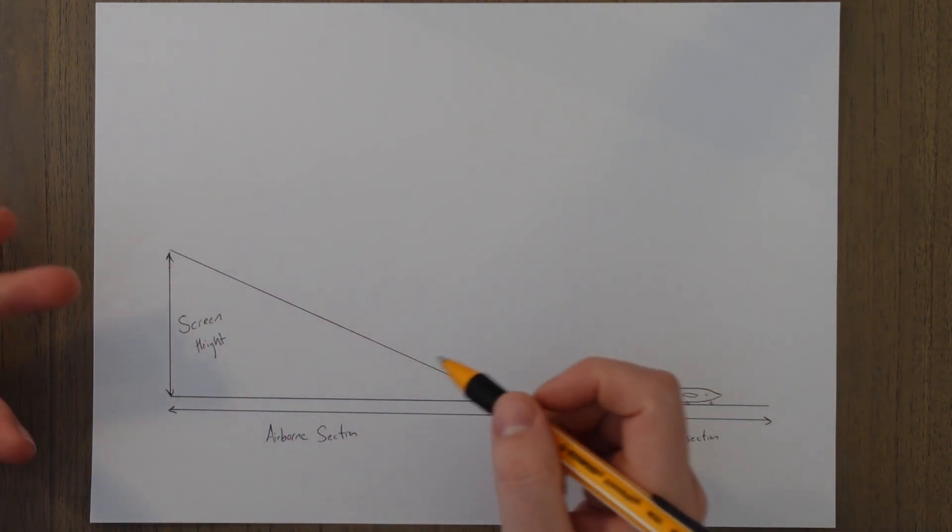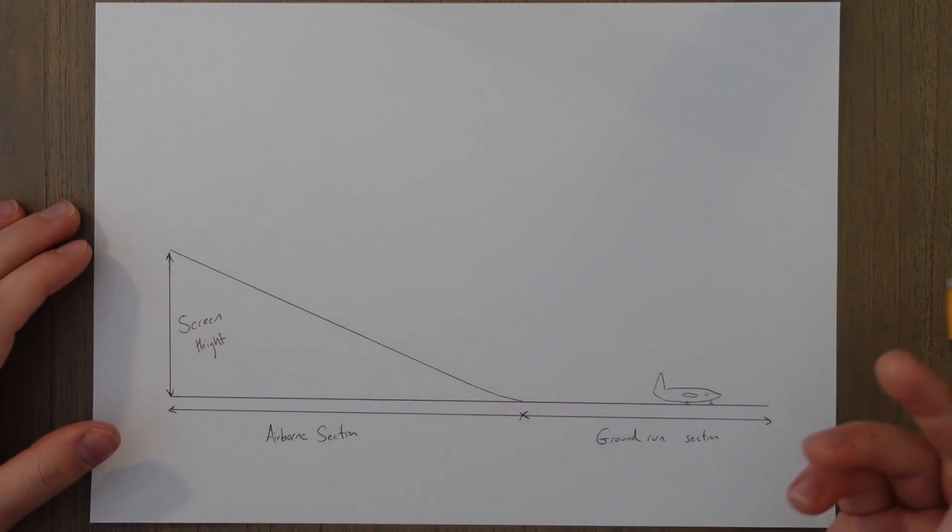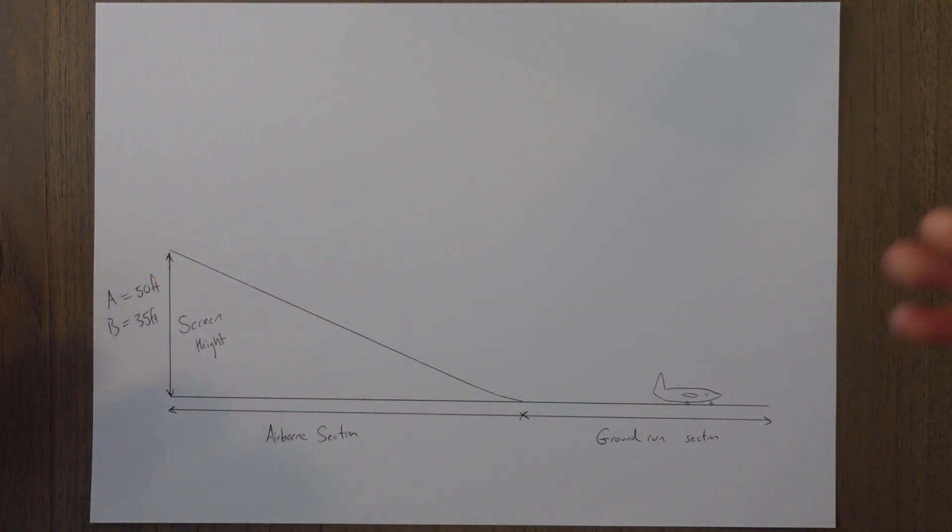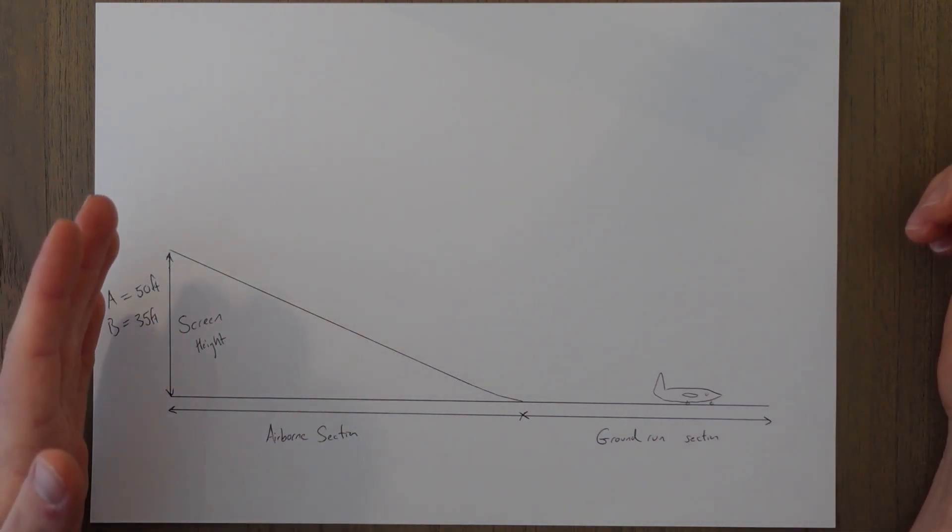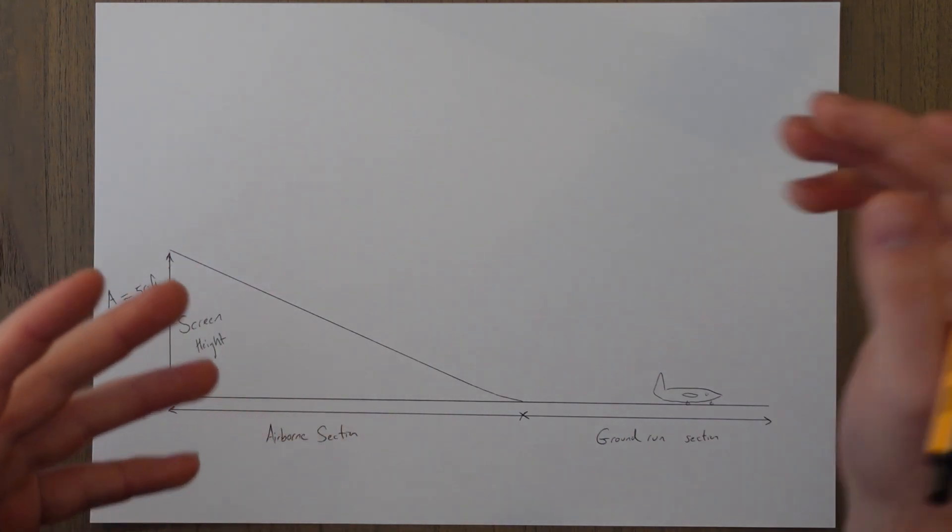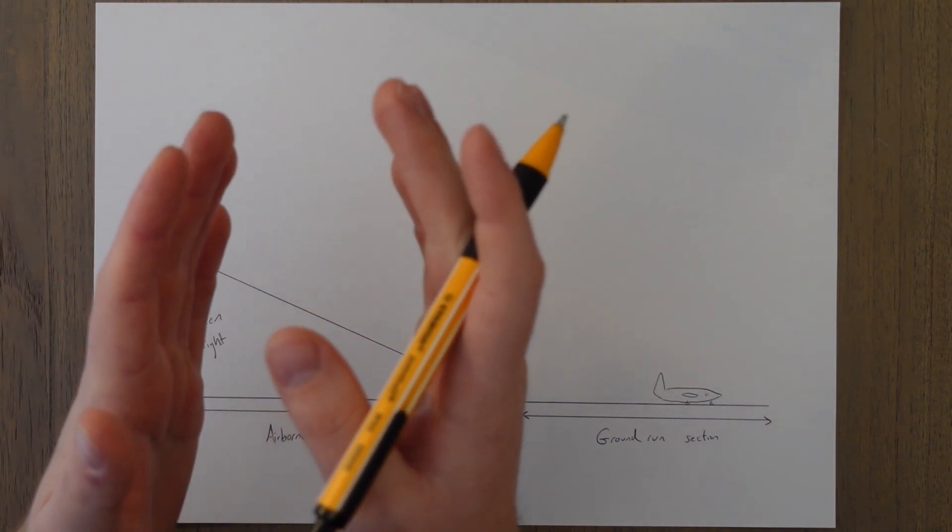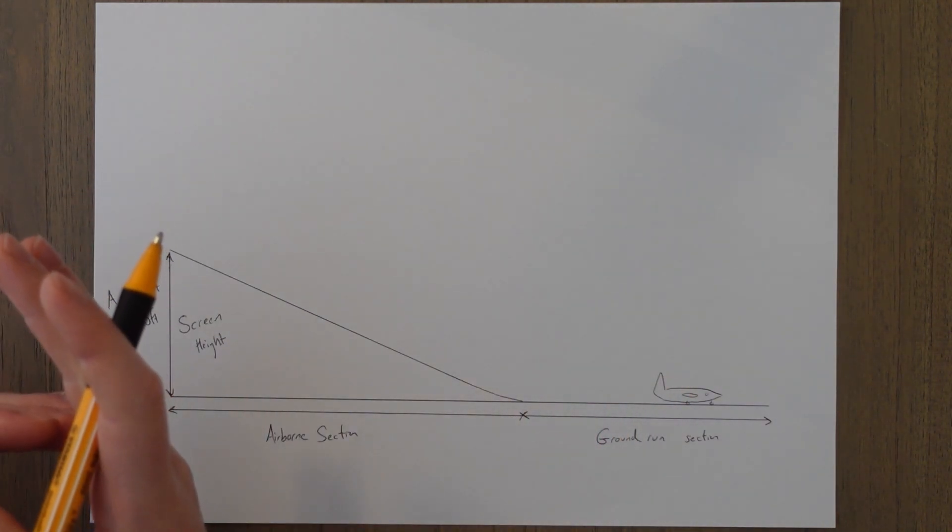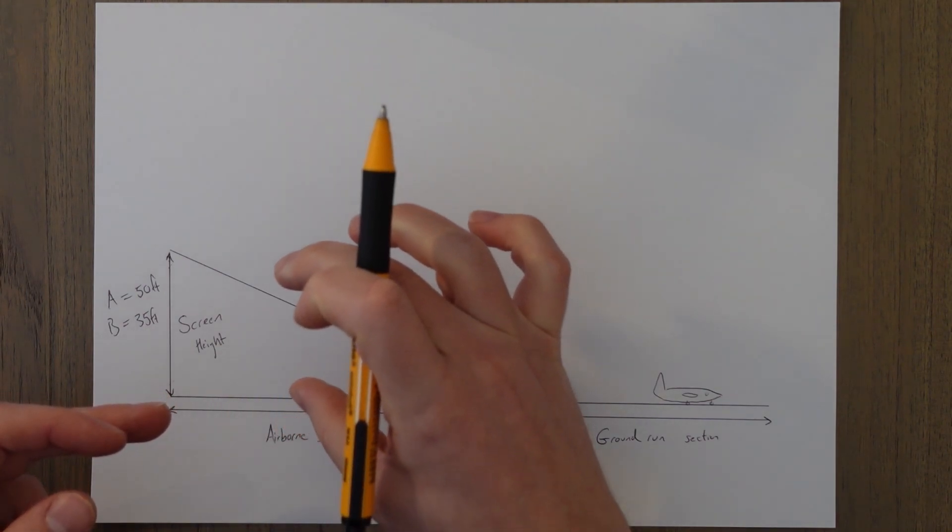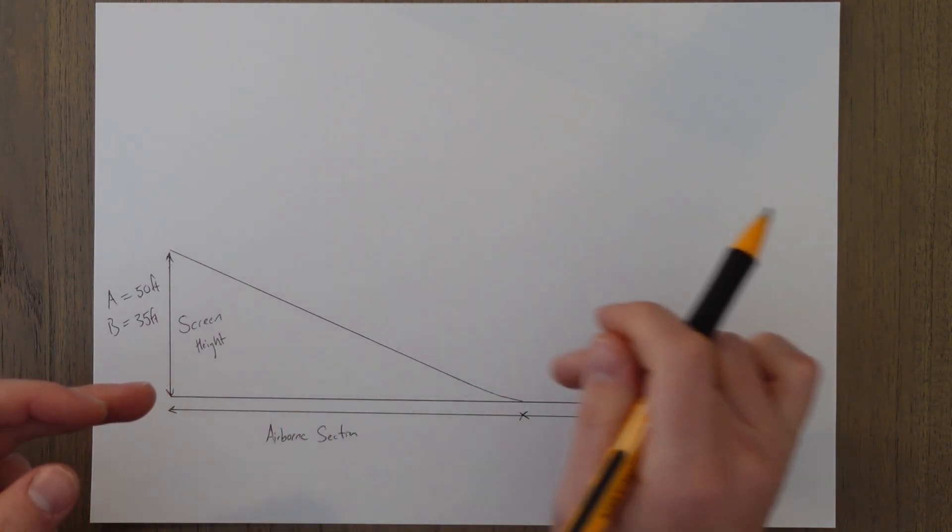And the screen height that we're talking about is usually 50 feet for a Class A and 35 for a Class B aircraft. The screen is an imaginary wall that is placed on the runway threshold that the lowest part of the aircraft must clear in order to land safely. And remember that thresholds can sometimes be displaced so it's not necessarily the end of the runway.